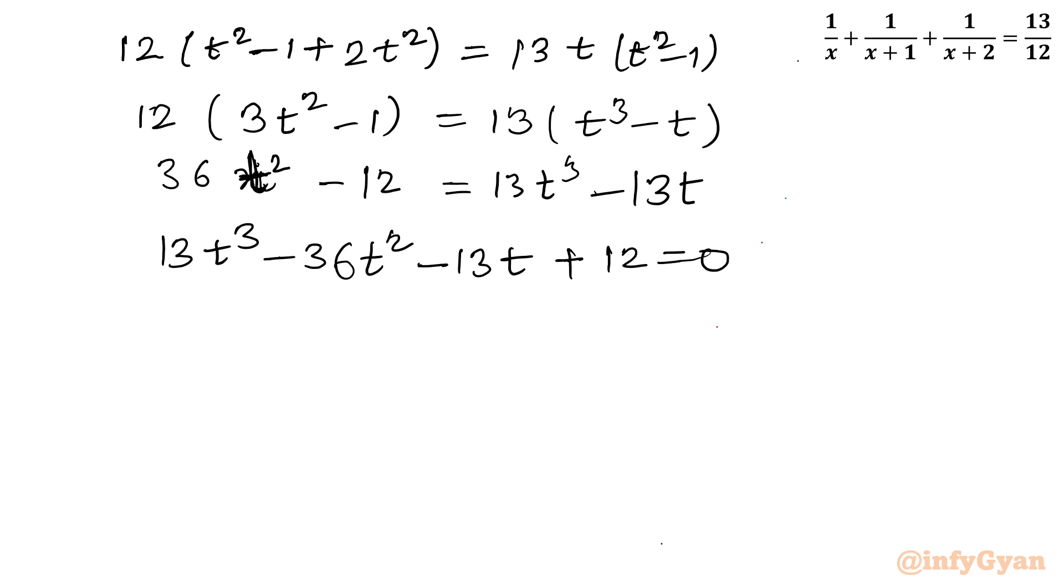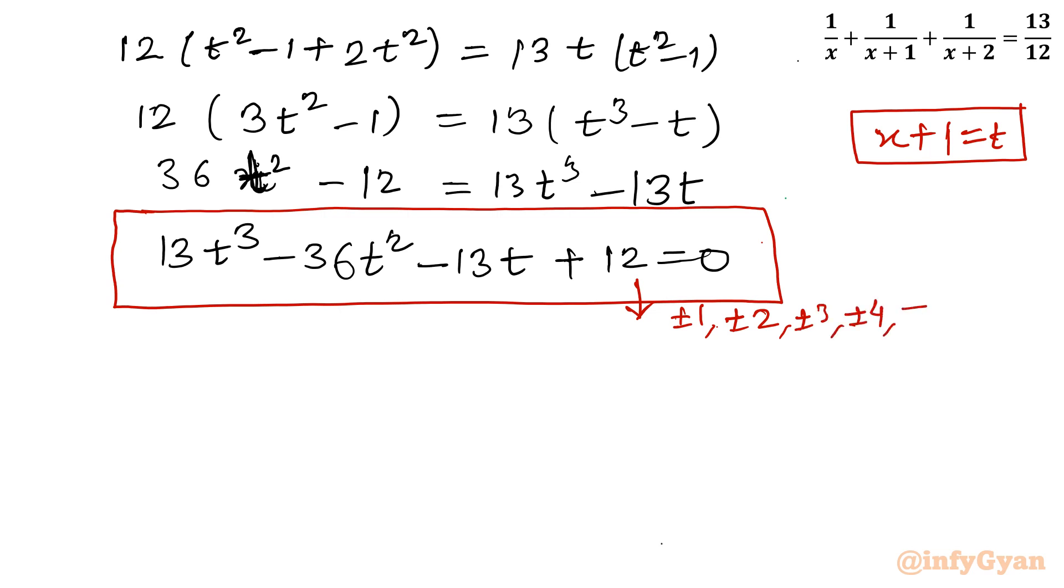This is our ultimate cubic equation. Now we have to solve this cubic equation. Let me remind you what was our substitution: x plus 1 equal to t. At last we will put back the value of t to get x. So I will use rational root theorem. The factors of 12 are plus minus 1, plus minus 2, plus minus 3, plus minus 4, plus minus 6, and plus minus 12. The leading coefficient is plus minus 1 and plus minus 13 as it is a prime number.